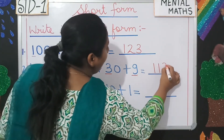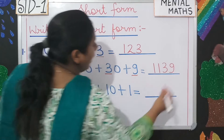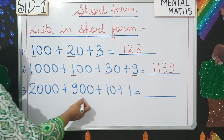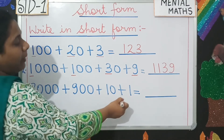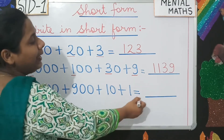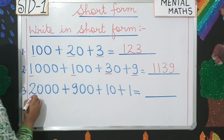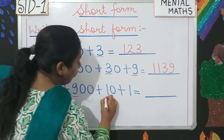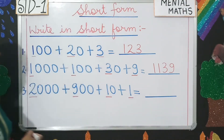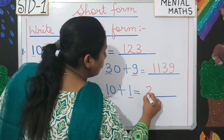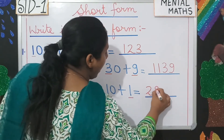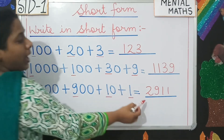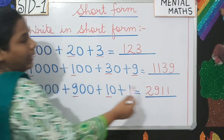Number three: 2,000 plus 900 plus 10 plus 1 equals dash. You'll pick 2, then 9, 1, 1. So you'll write 2,911.